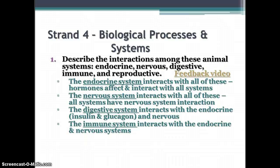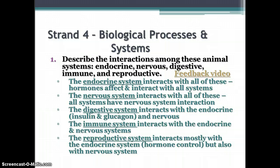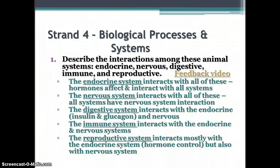Of course, the immune system cells, when they are defending the body, can interact with just about any cell of the body depending on what condition is occurring. The reproductive system interacts mostly with the endocrine system, but also with the nervous system. Because the digestive system provides nutrients for all systems, you could say they all interact with it. Also, if there's an infection in the reproductive system, the immune system would respond there as well.